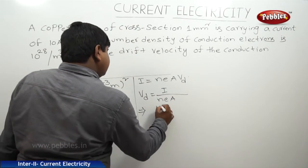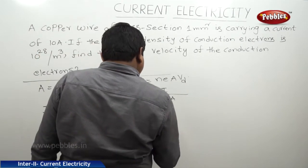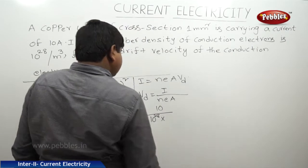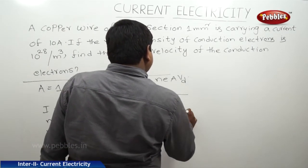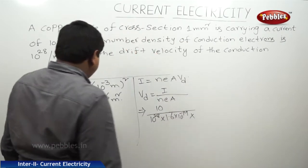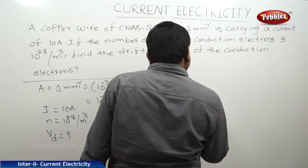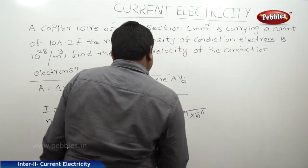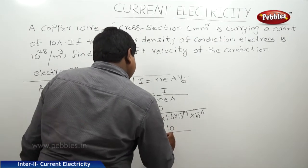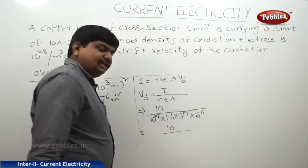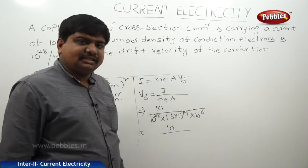Substituting values: I is equal to 10 amperes, n is equal to 10 to the power of 28, e is equal to 1.6 into 10 to the power of minus 19, and A is equal to 10 to the power of minus 6. In the denominator, the power becomes 28 minus 19 plus 9, then minus 6, giving 3.